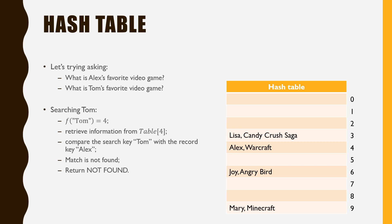When searching for Tom's record, we perform a similar procedure. Tom's corresponding hash value is also 4, and we retrieve the record from the fourth position of the hash table. When comparing the search key with the record key, we find that they do not match. In this case, we report that Tom's record does not exist in the hash table.